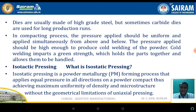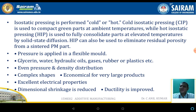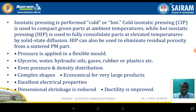Isostatic pressing is of two types: cold isostatic pressing (CIP) and hot isostatic pressing (HIP). Cold isostatic pressing works at room temperature where temperature is not a parameter, whereas in hot isostatic pressing, elevated temperature is a key parameter. Powder metallurgy parts require pressure applied in a flexible mode, and even pressure and density distribution matters to achieve complex shapes.